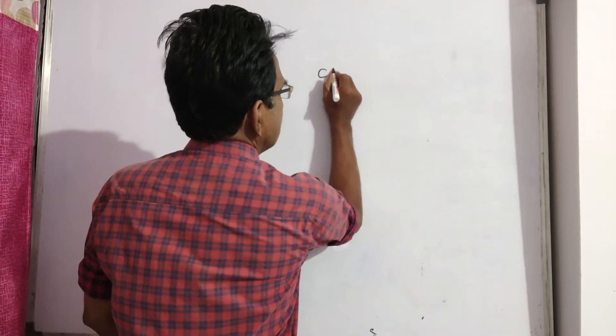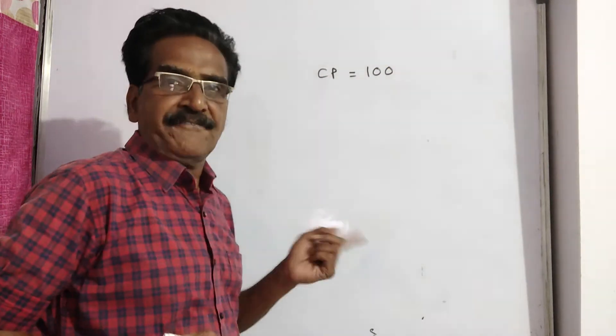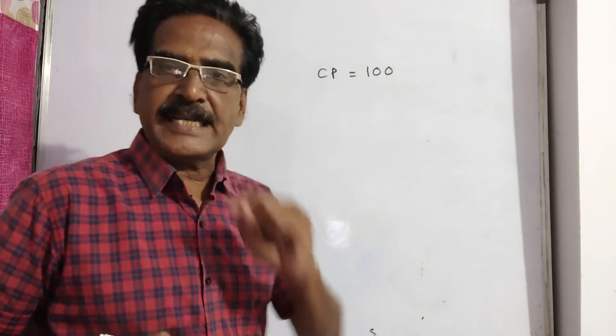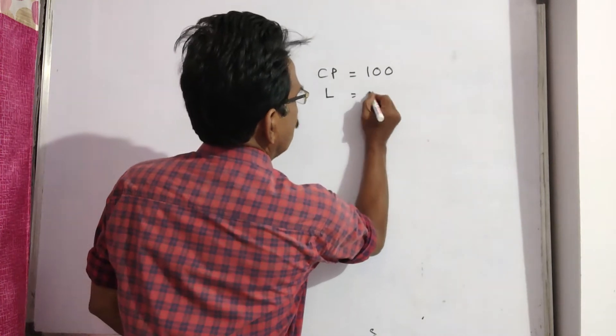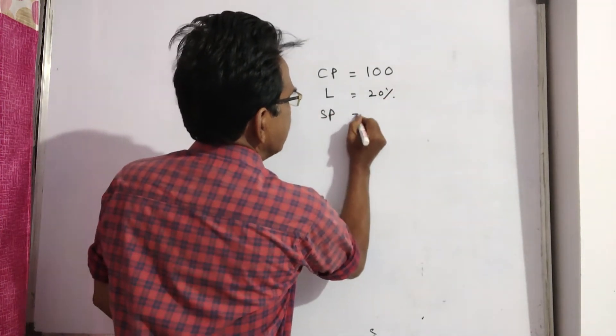Say cost price is 100. Now, if he sells at 9/13 of its actual selling price, he incurs a loss of 20%. Loss equals 20%, then selling price will be 80.